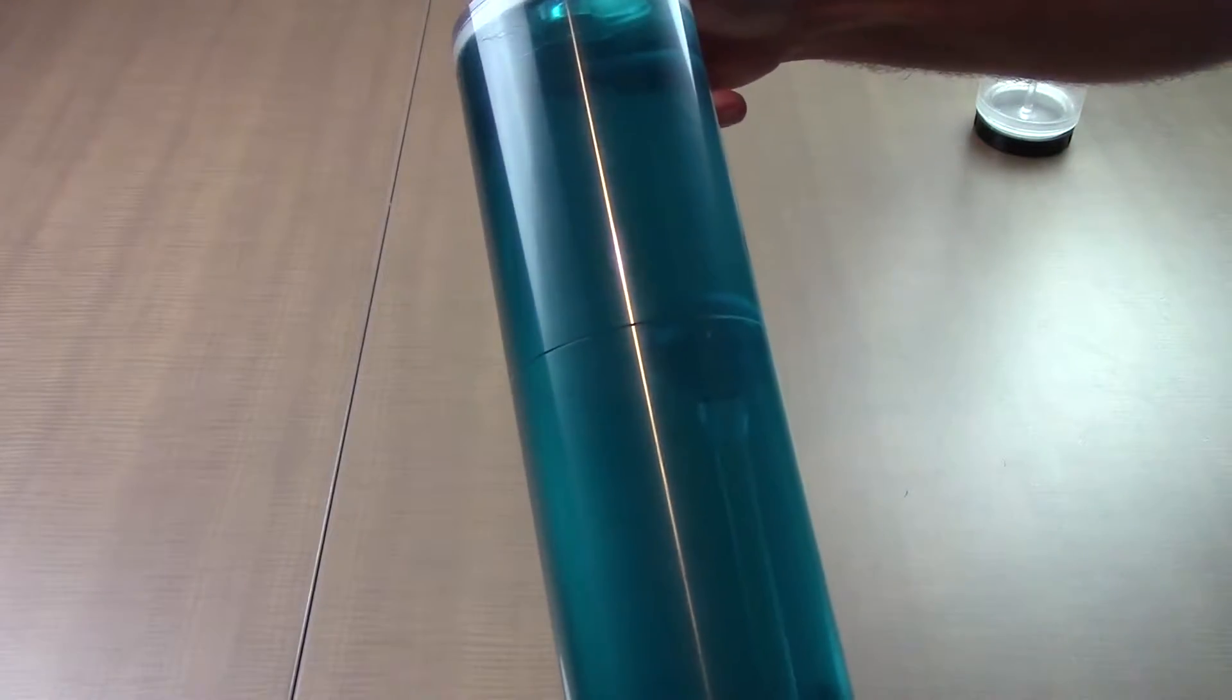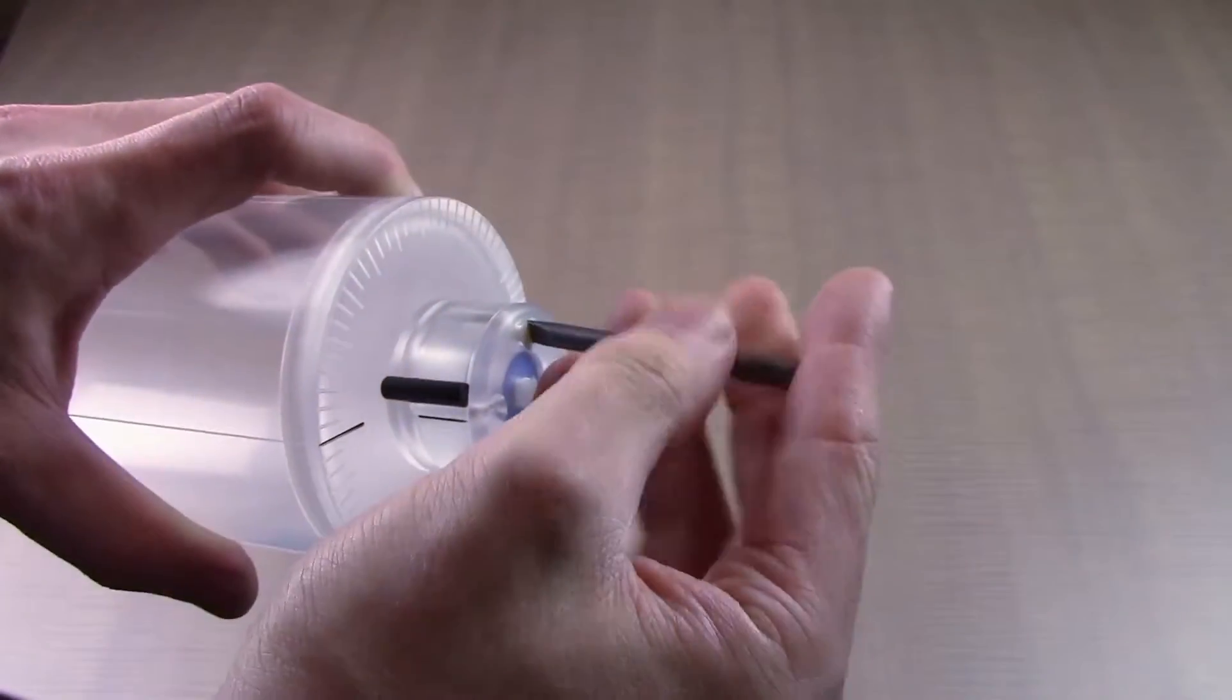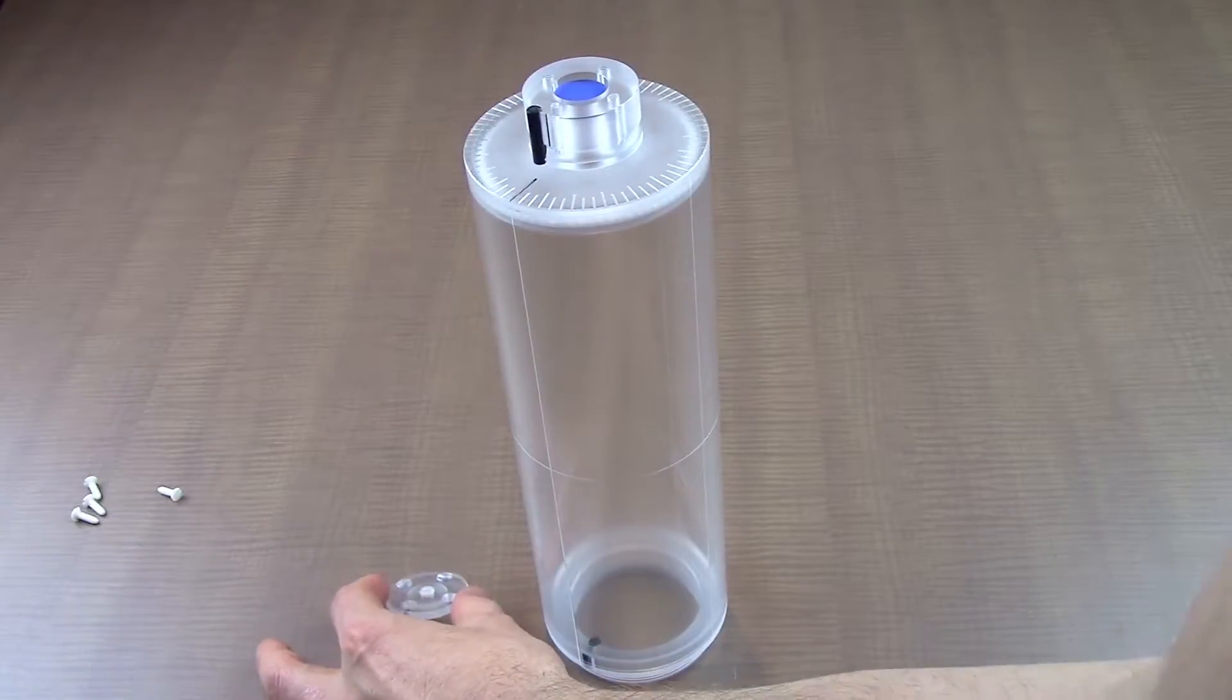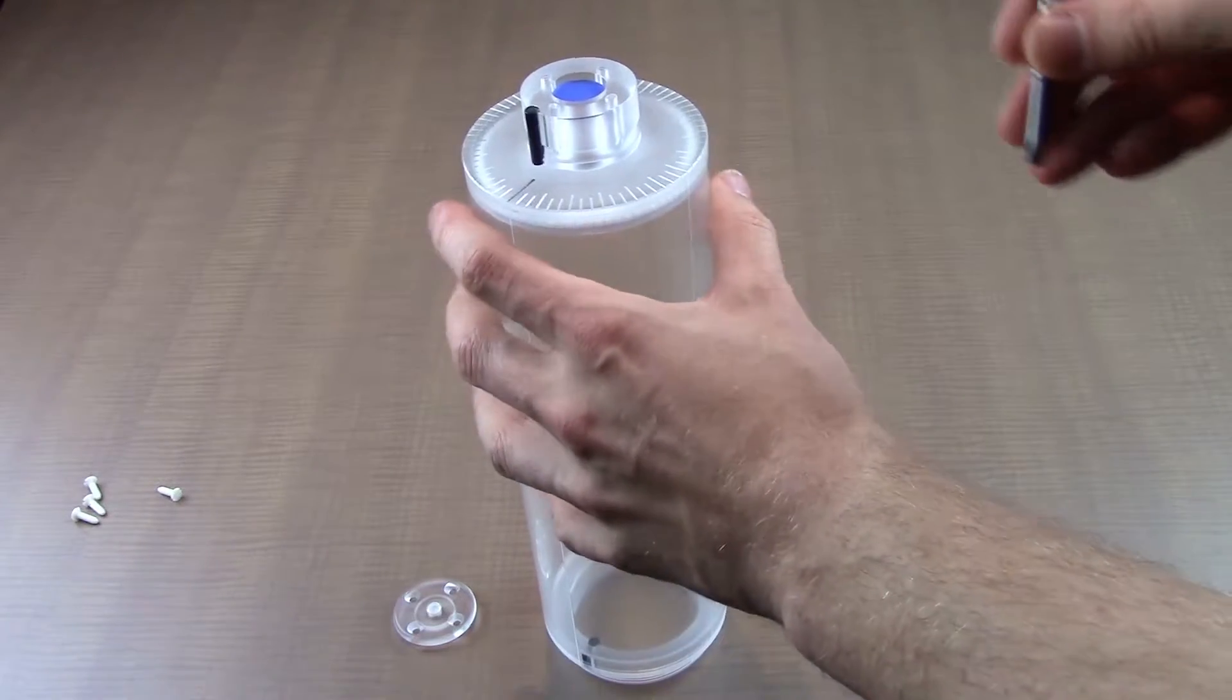To fill the insert, begin by using the supplied screwdriver bit to remove the four screws that secure the sealing cap. Then remove the cap and use the bit again to carefully scoop out the blue seal.